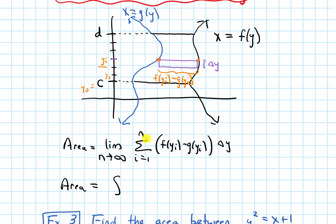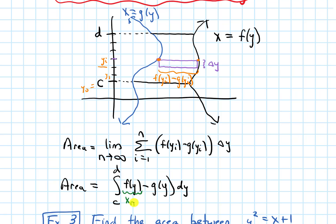So my definite integral will have y as the variable. If I think about y for this region, it sort of starts at c and goes until d. The delta y becomes a dy in the integral, and this function in terms of y sub i's — I just change those y sub i's to y. So I'll get f of y minus g of y. In terms of my formula, f of y I think of as the function on the right, which I'm going to call x subscript right — because x is going to be isolated. And g of y I'm calling x subscript left, because it's the function on the left.